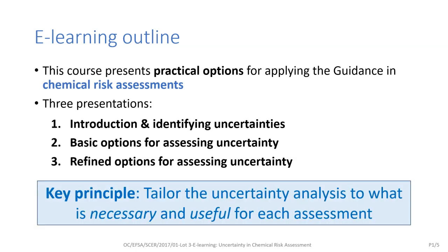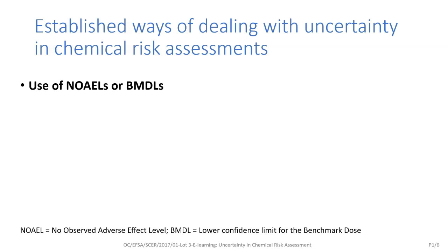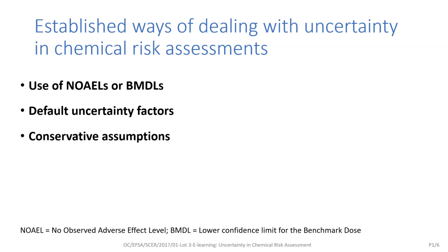The key principle throughout is to tailor the uncertainty analysis to what is necessary and useful for each assessment. Of course, scientists are used to dealing with uncertainty, and there are well-established approaches for this in chemical risk assessment. For example, uncertainty about the dose at which effects occur in animals is addressed by using no observed effect levels or the BMDL — the lower confidence limit for the benchmark dose. Uncertainty about differences in toxicity within and between species is addressed by the default uncertainty factor of 100. Some sources of uncertainty are addressed by conservative assumptions, such as assuming food additives are always used at maximum permitted levels. And some sources of uncertainty are addressed by alternative scenarios, for example, using lower and upper bounds for non-detects in occurrence data.